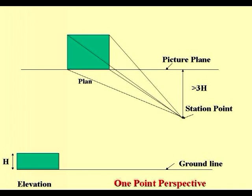From the station point, we can draw rays to all the corners of the rectangular block. Once these rays are drawn to all the corners of the rectangular block,